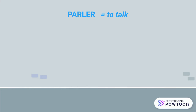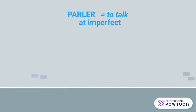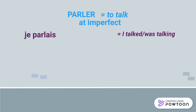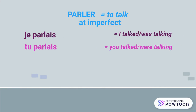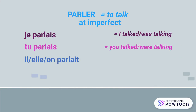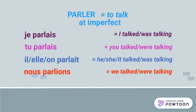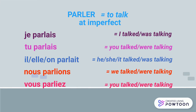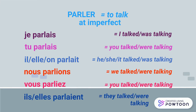For instance, parler (to talk) at the imperfect: je parlais, tu parlais, il/elle parlait, nous parlions, vous parliez, ils/elles parlaient.